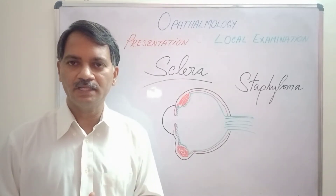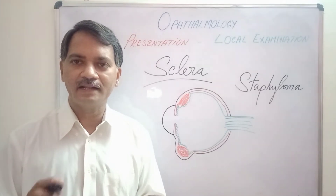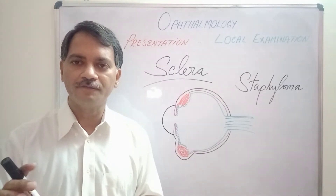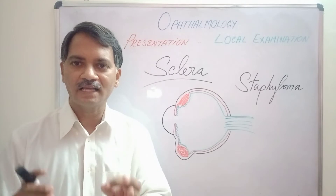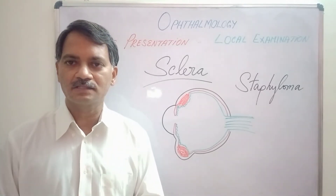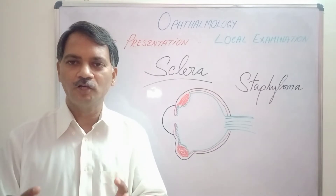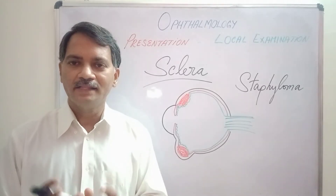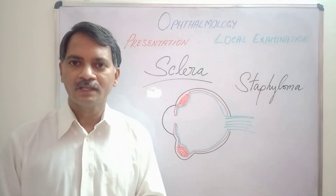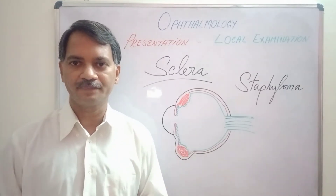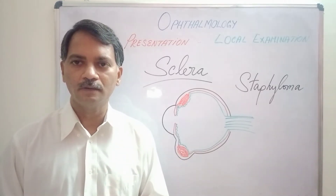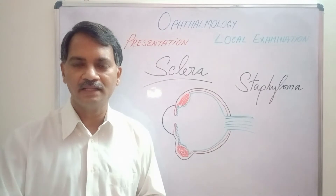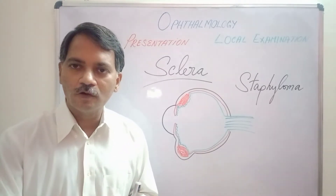What do you mean by staphyloma? The definition of staphyloma is: ectatic cicatrix of the outer coat of the eyeball with incarceration of the uveal tissue. Whenever there is disease of the cornea or the sclera, that particular disease leads to thinning out of these structures, causing them to bulge outwards. When they bulge outwards like a balloon, automatically the underlying uveal tissue — that is the iris, or the ciliary body, or the choroid — also goes into the bulge.